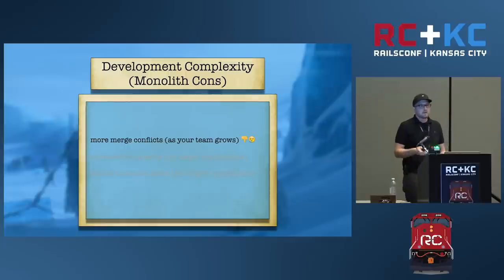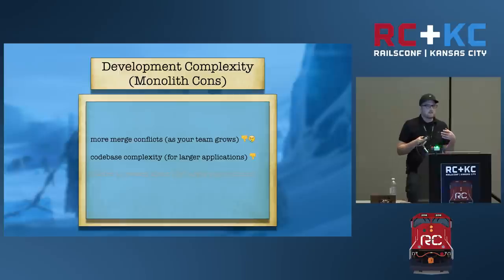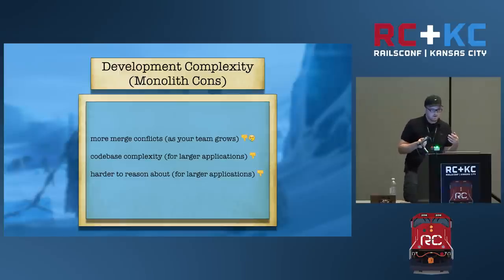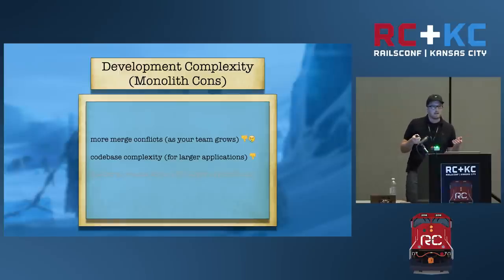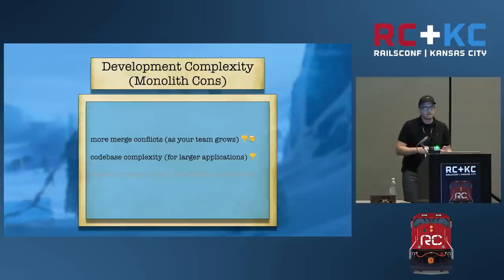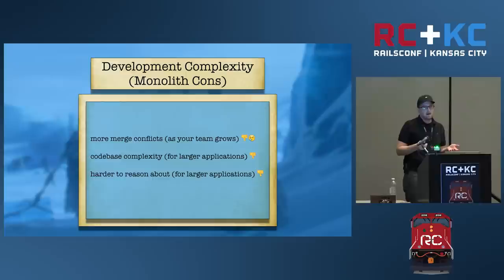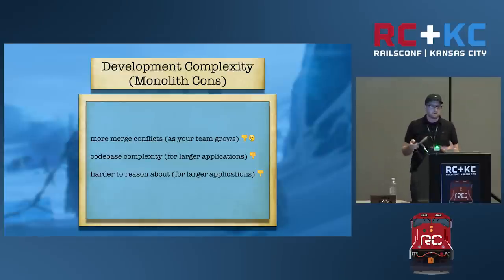But as your team grows and everyone is contributing to the same code base, you eventually start getting more merge conflicts. And then the code starts becoming more and more complex, especially when people put in code to meet deadlines, which possibly causes them to skip specs or that much needed refactor, et cetera. And that's all going to make the code harder to reason about and maintain.